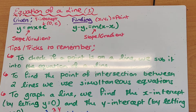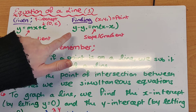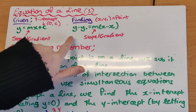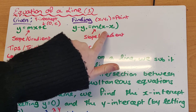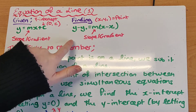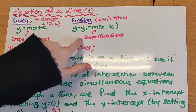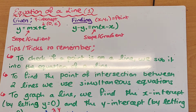If we're trying to find the equation of a line, we tend to use the formula y minus y1 is equal to m by x minus x1, where m is your slope or gradient, and x1, y1 is a point on the line.